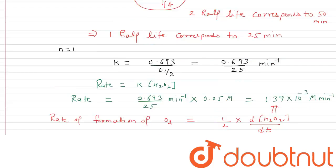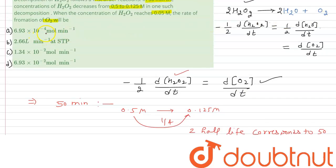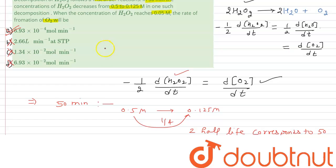Checking the options: Option A is 6.93 × 10⁻⁴ molar per minute — that matches our answer. Option B (2.66 liters at STP) is wrong as we did not calculate a volume. Option C (1.34 × 10⁻²) is also wrong. Option D is also wrong. So option A, 6.93 × 10⁻⁴, is the correct answer.